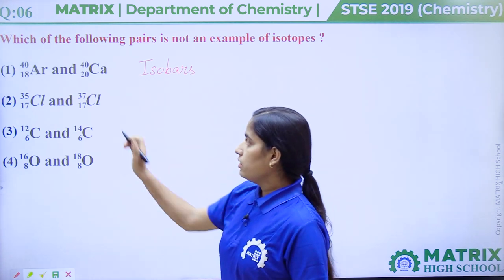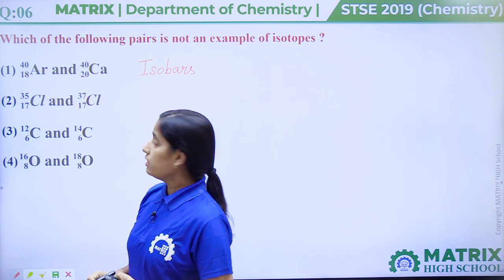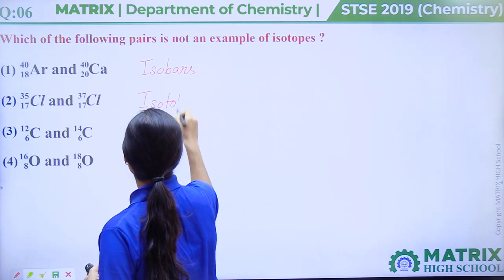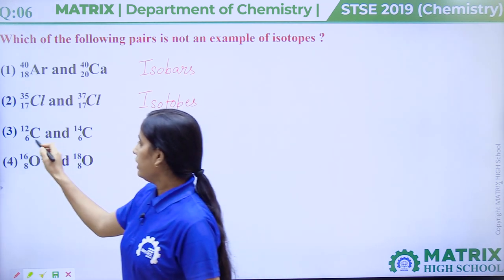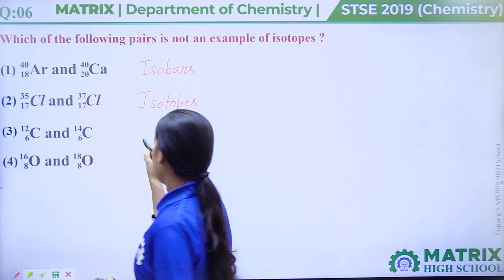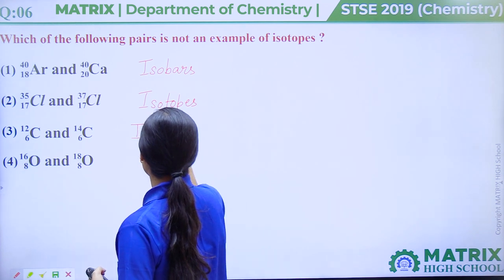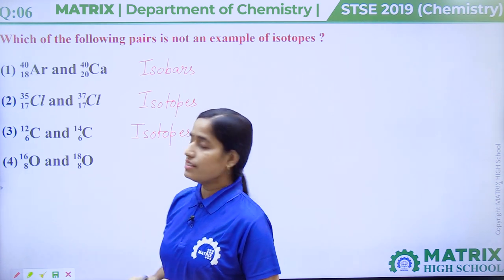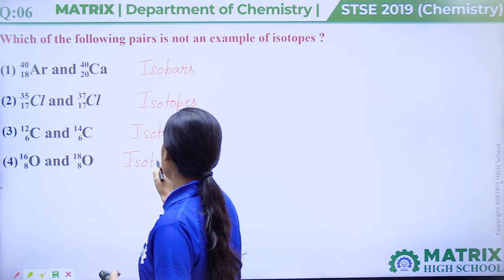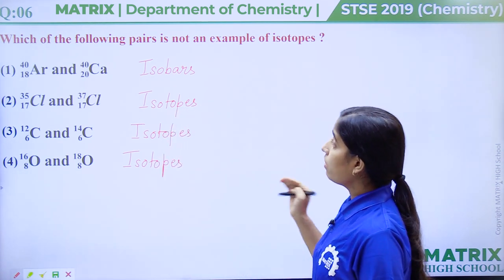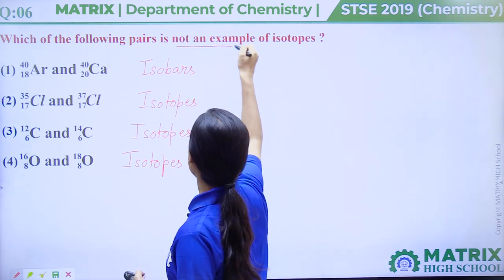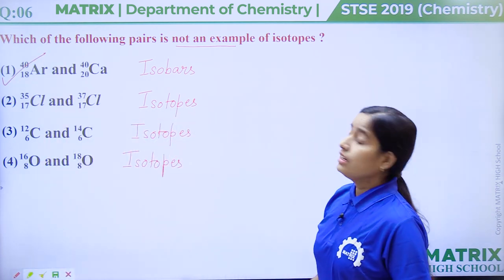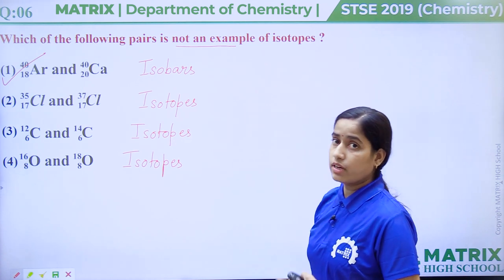In option 2, both chlorine atoms have the same atomic number but different mass numbers, so they are isotopes. In option 3, both carbon atoms have the same atomic number but different mass numbers — examples of isotopes. In option 4, oxygen atoms also have the same atomic number but different mass numbers — examples of isotopes. The question asks which is NOT an example of isotopes, so the correct answer is option number 1 — those are isobars, not isotopes.